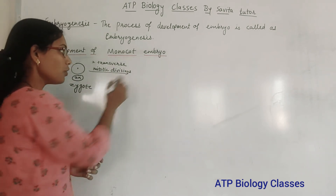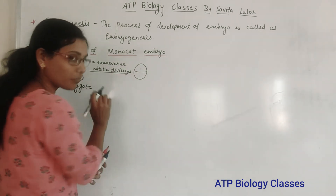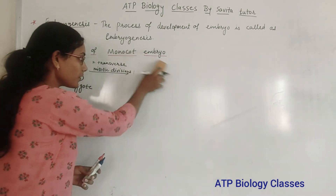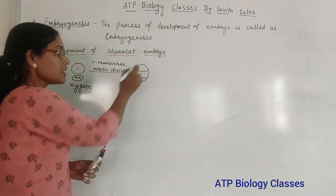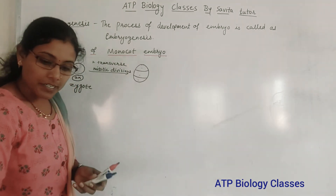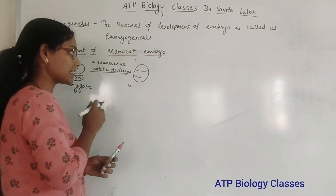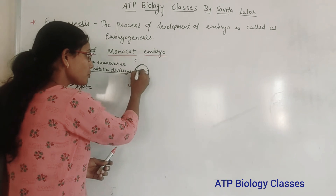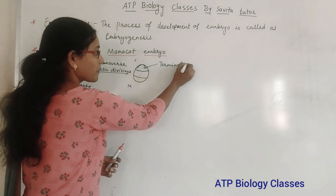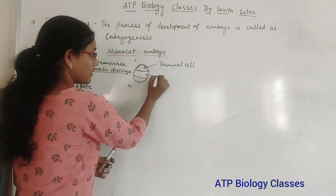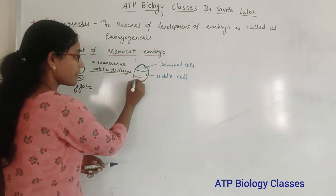Two transverse mitotic divisions take place, forming a three-cell structure. The upper cell, with respect to the chalaza — chalaza being the top part and micropyle the bottom part — is called the terminal cell. The middle cell is the second, and the red-colored one is the basal cell.